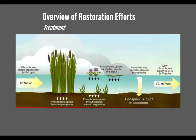Stormwater treatment areas leverage Mother Nature to do some work for us. We can construct treatment wetlands that are managed to be able to remove nutrients. Water comes in, emergent plants take up phosphorus as well as submergent plants, and there's also some settling. The end result is a reduction in phosphorus.